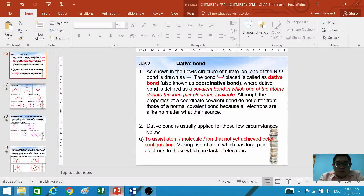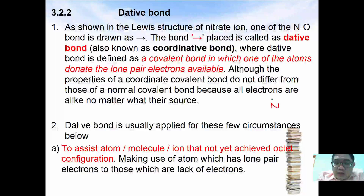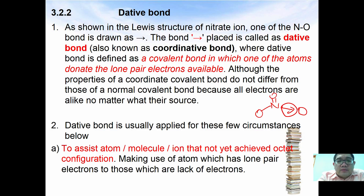We're going to continue with dative bond. From the structure of nitrate, where nitrogen is double bonded to oxygen and there is a single bond to oxygen, you can see this arrow on the oxygen. This arrow is called a dative bond.